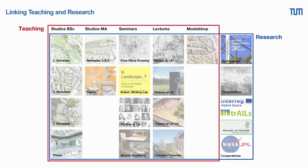This diagram shows the program at my chair of landscape architecture and transformation and illustrates how we link teaching and research activities. In the red box, you can see all our teaching activities — studios for bachelor and master, seminars, lectures, and we also have a model shop. In the blue box, you can see the research activities, composed of publications, dissertations, and all kinds of cooperations.